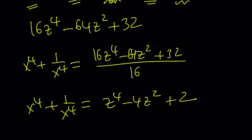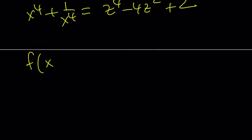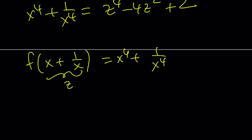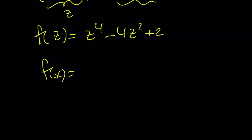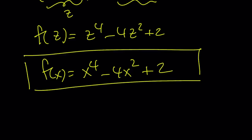We said that f of x plus 1 over x equals x to the fourth plus 1 over x to the fourth. We called this z, and now we got z to the fourth minus 4z squared plus 2. So f of z becomes z to the fourth minus 4z squared plus 2. Therefore f of x can be written as x to the fourth minus 4x squared plus 2. And this brings us to the end of the second method.